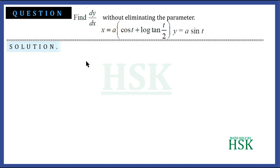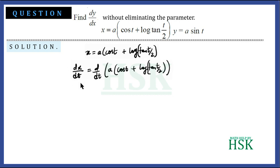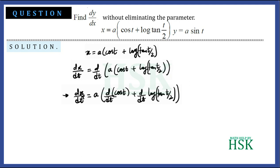To solve this question, since both x and y depend on the parameter t, we differentiate each with respect to t. So we get dx/dt = d/dt of a(cos t + log tan(t/2)).